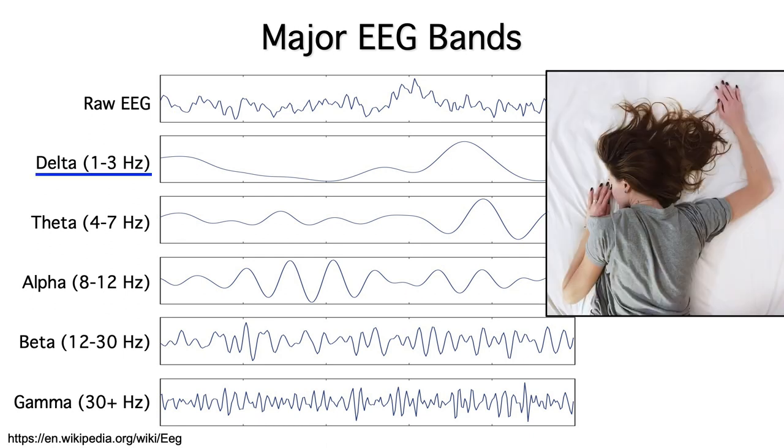You mainly see delta band oscillations when someone is asleep. In fact, these are the slow waves that give slow wave sleep its name.